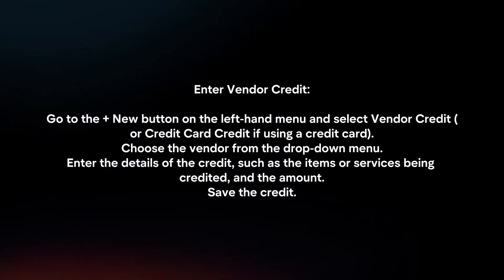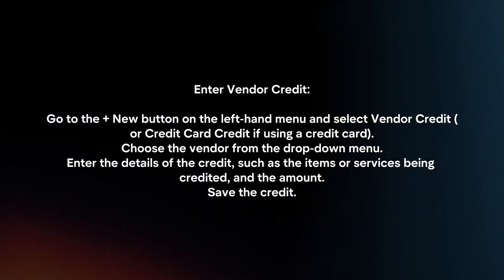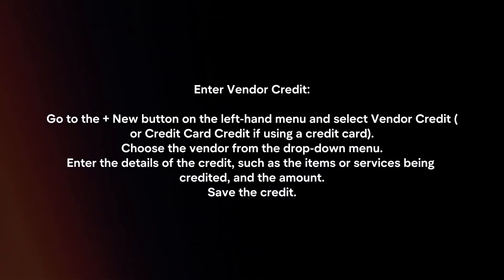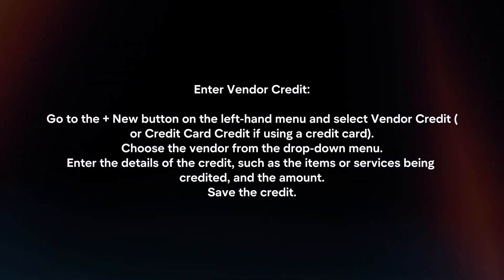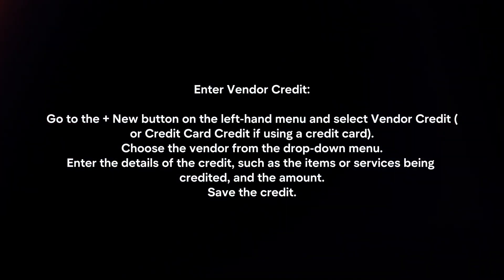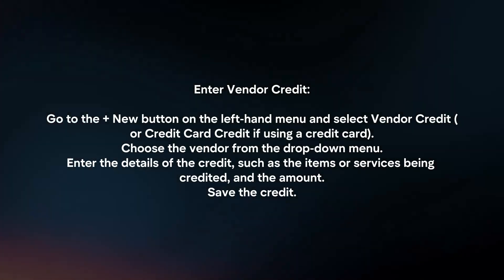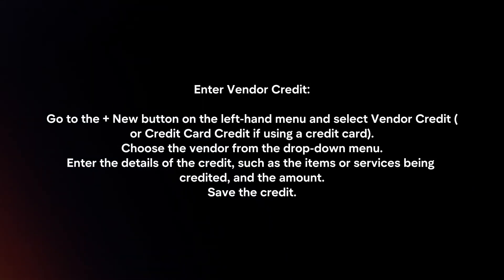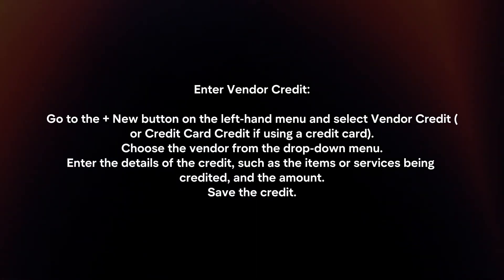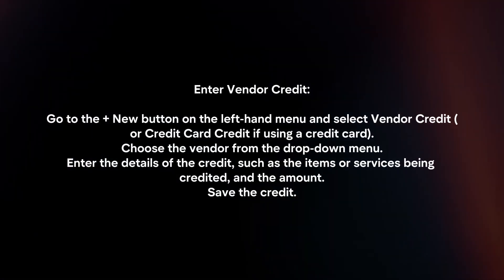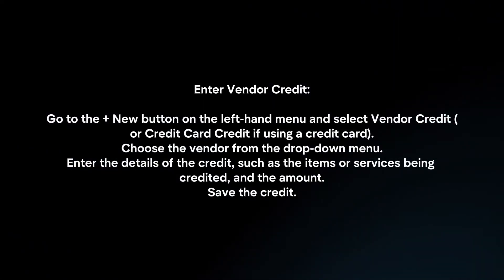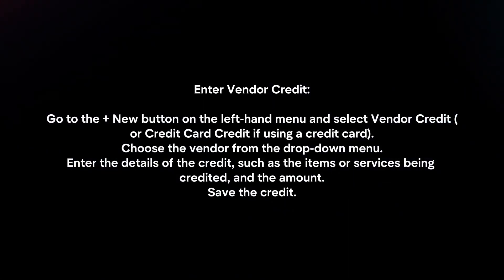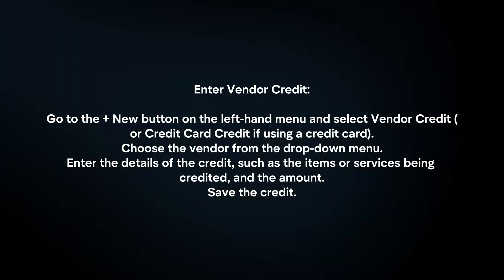Enter vendor credit. Go to the plus new button on the left-hand menu and select vendor credit. Choose the vendor from the drop-down menu. Enter the details of the credit, such as the items or services being credited and the amount. Save the credit.